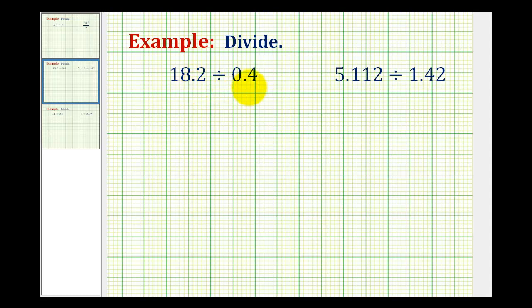We want to divide a decimal by another decimal. The first step in these problems will be to write this as a long division problem. So we'll have 18.2 divided by 0.4.